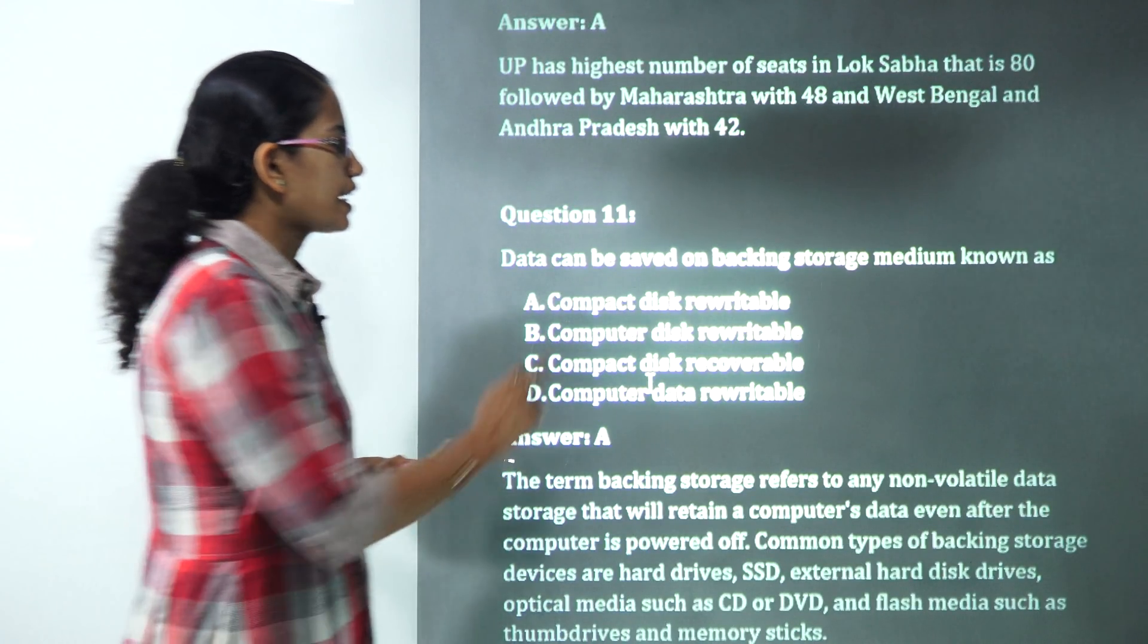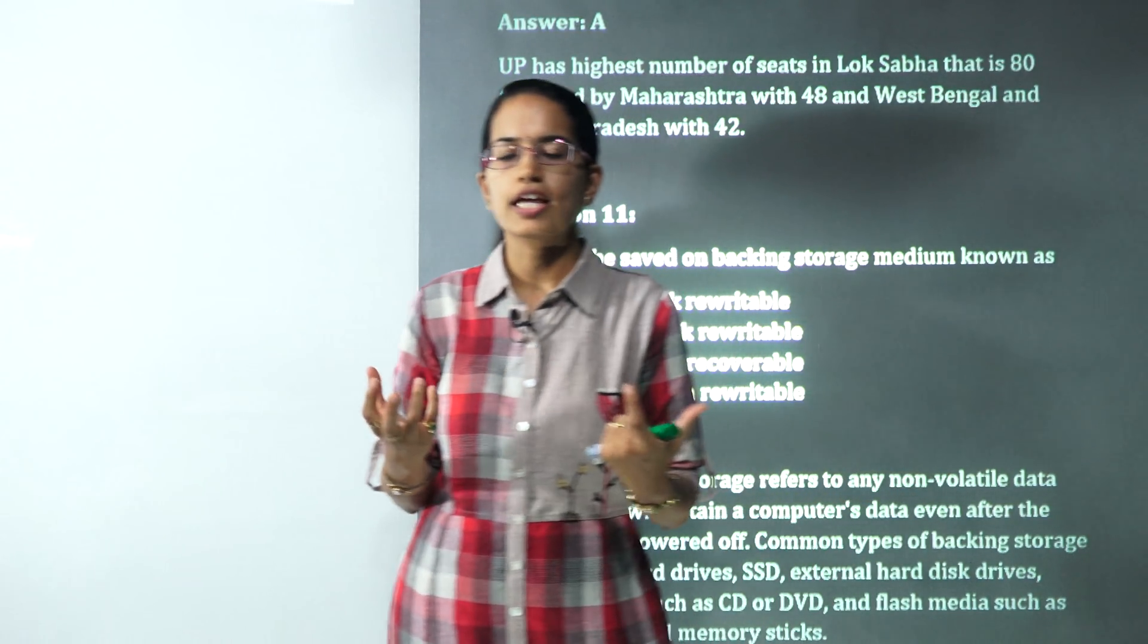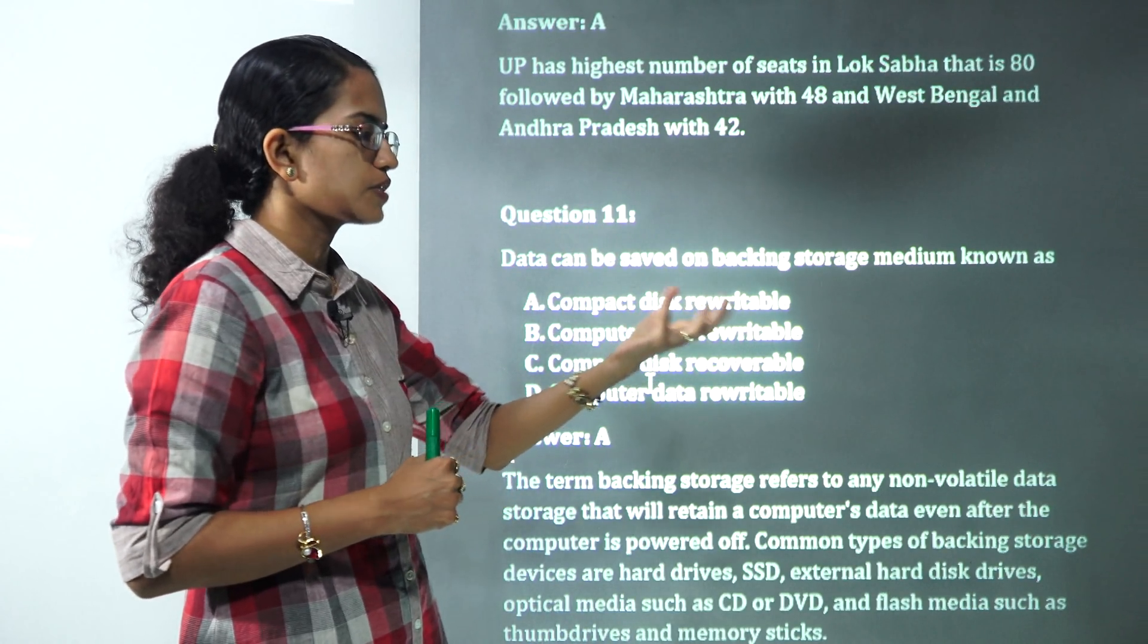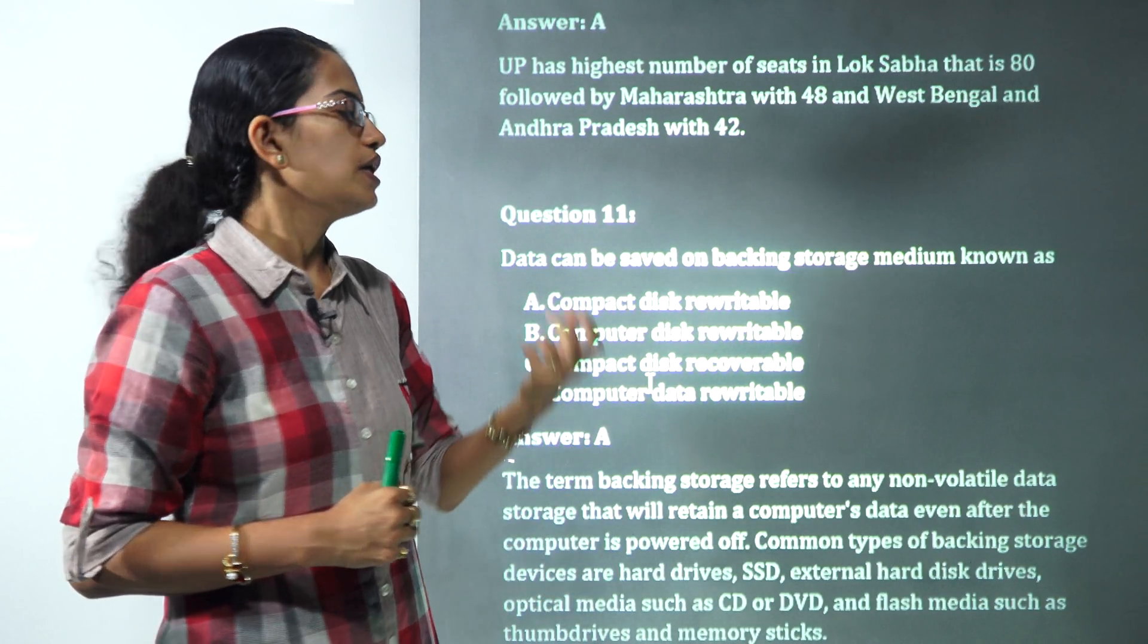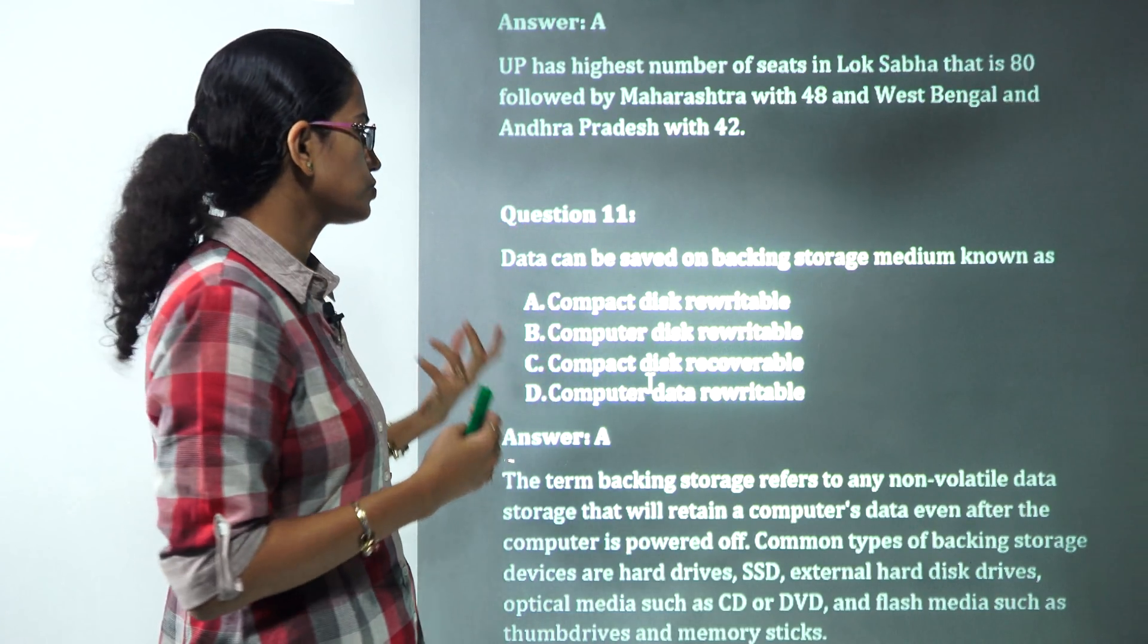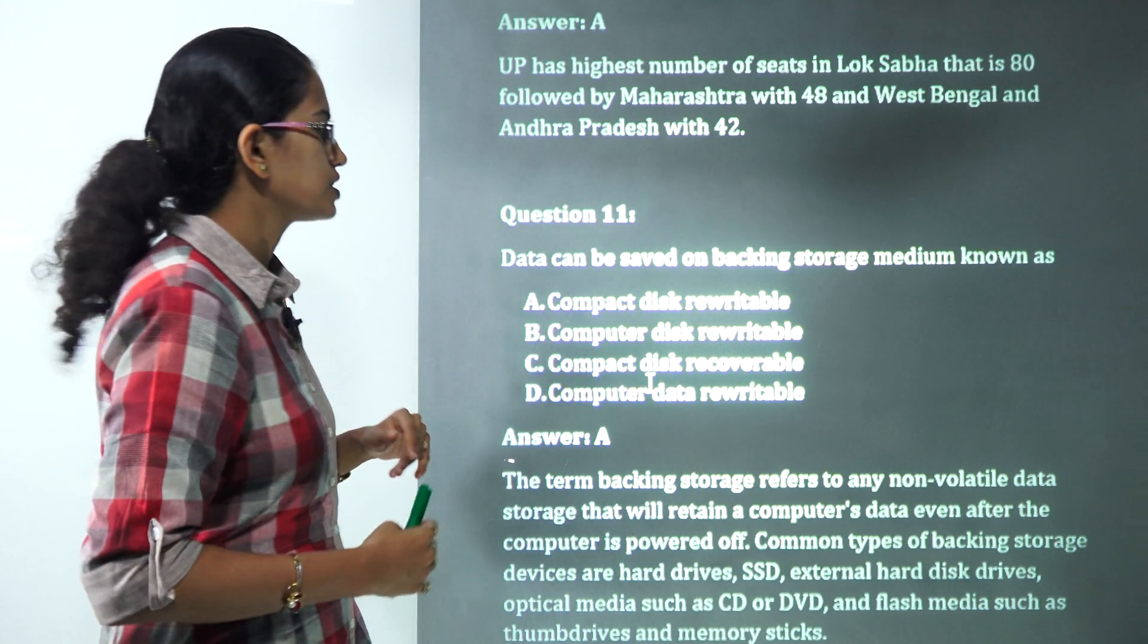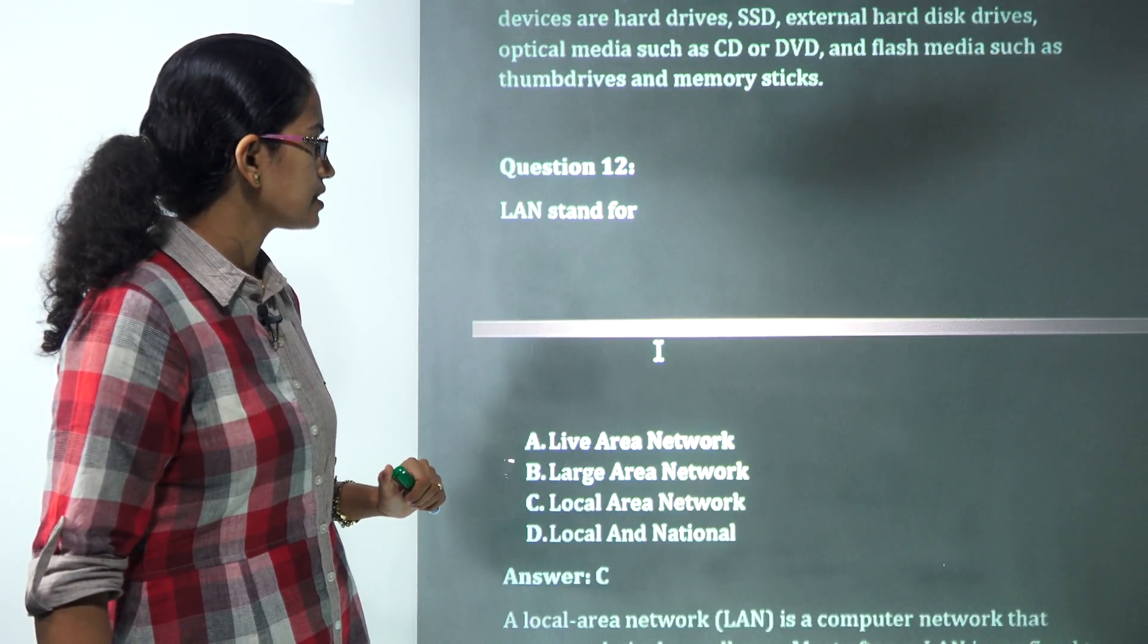Data can be saved on backing storage. What is backing storage? Backing storage is a non-volatile storage that could be seen or where you have the data in the form of removable hard disk which could be basically the data remains even if the computer system is powered off. Let's say CD, DVD, hard disk. All those would be examples of it. Here we have CD writable. From the choices, the correct full form or the correct acronym for CD writable would be compact disk rewritable. You have A as the correct answer here.